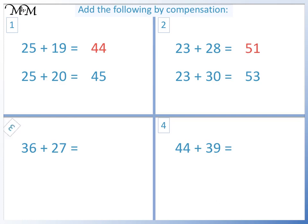Question 3: 36 plus 27. We can add 3 to 27 to make 30. 36 plus 30 equals 66. Because we added 3 to the question, we need to subtract 3 from our answer. So 36 plus 27 equals 63.